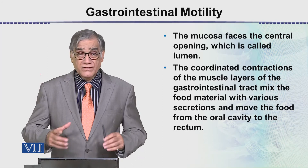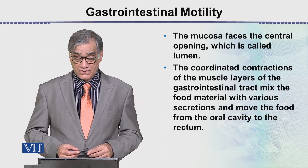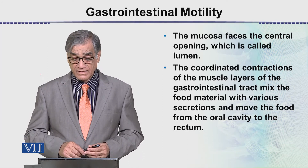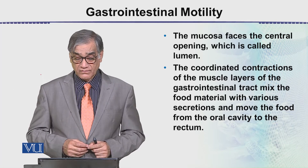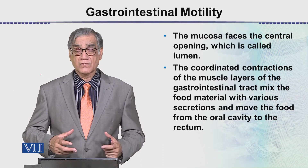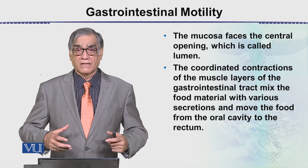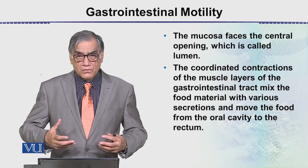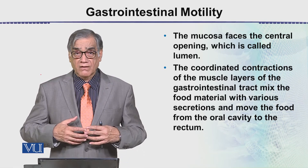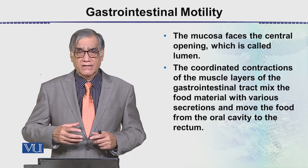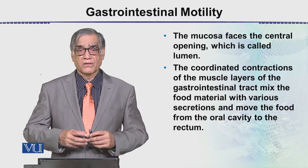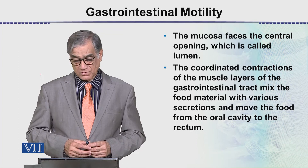The coordinated contractions of the muscle layers of the gastrointestinal tract mix the food material with various secretions. These secretions can be mucus, enzymes, and so on. They mix with the food and then digestion occurs.